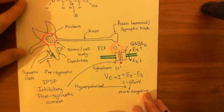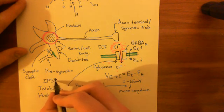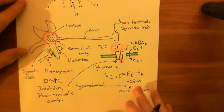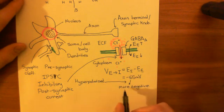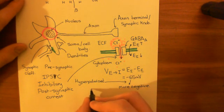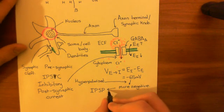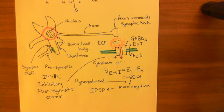I for inhibitory, PS for postsynaptic — and C for current. I should clarify: that abbreviation IPSP stands for inhibitory postsynaptic potential, which is slightly different. The IPSC, the inhibitory postsynaptic current, is the movement of charge; what it causes — the hyperpolarisation — is then called an inhibitory postsynaptic potential, abbreviated to IPSP. So the IPSC causes an IPSP, an inhibitory postsynaptic potential.